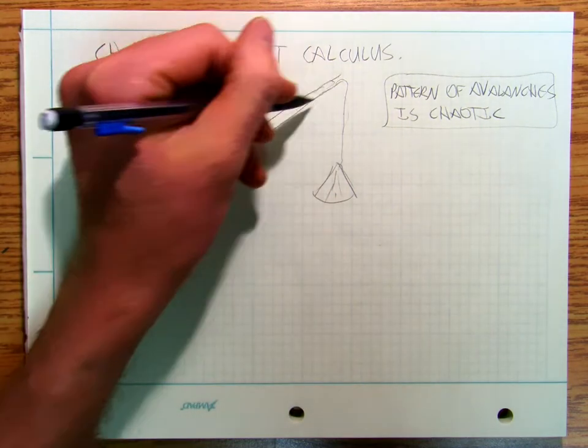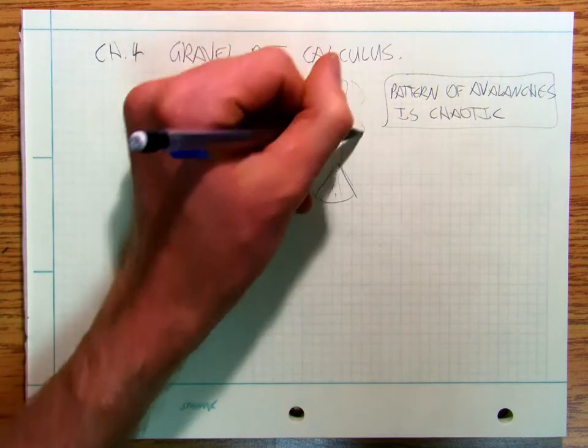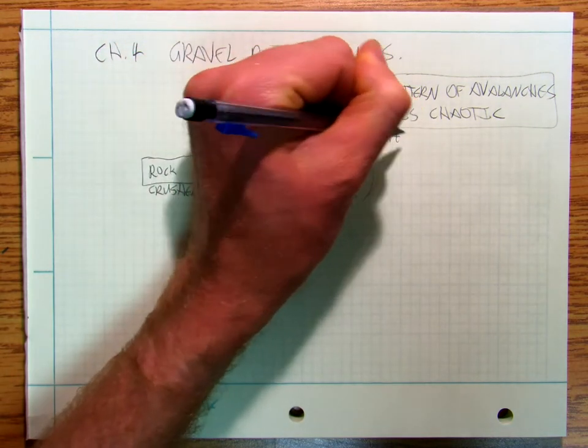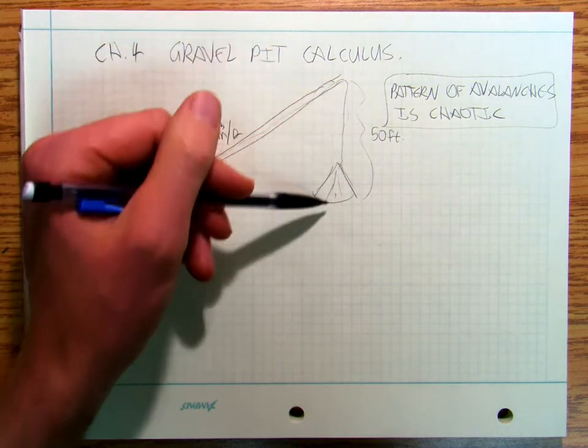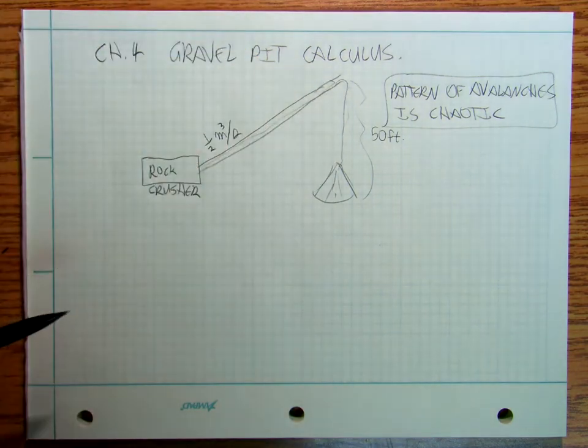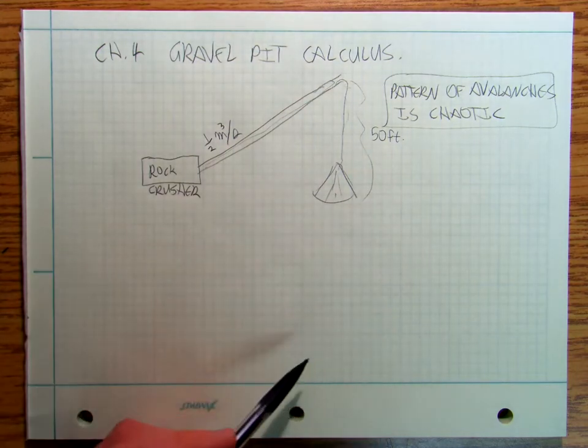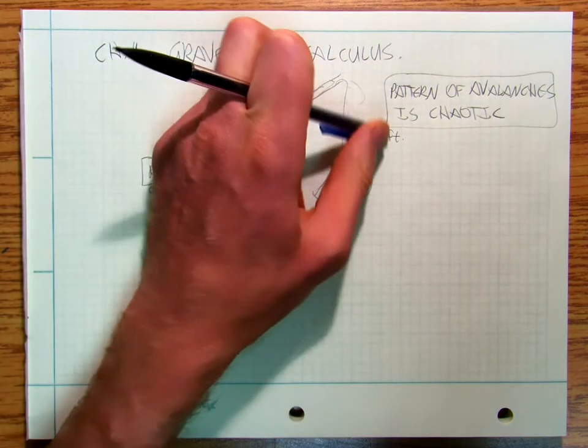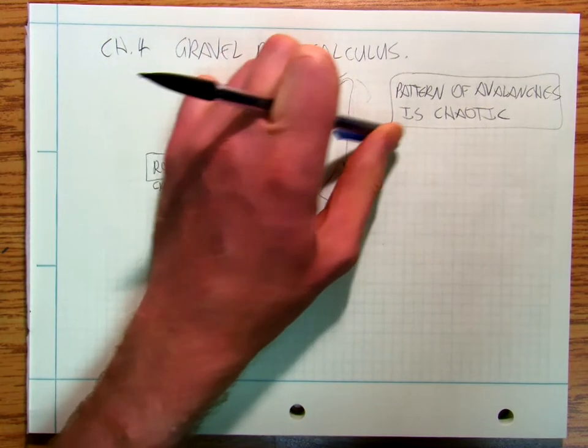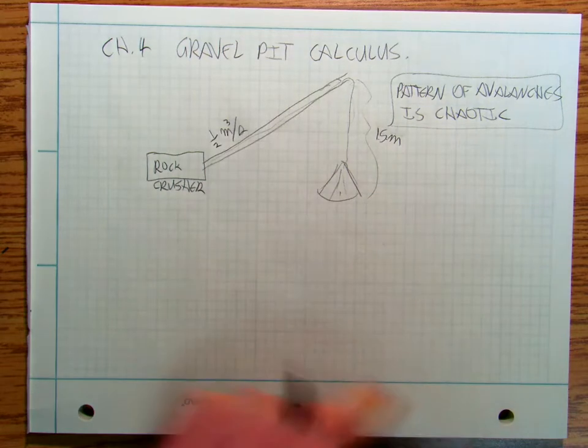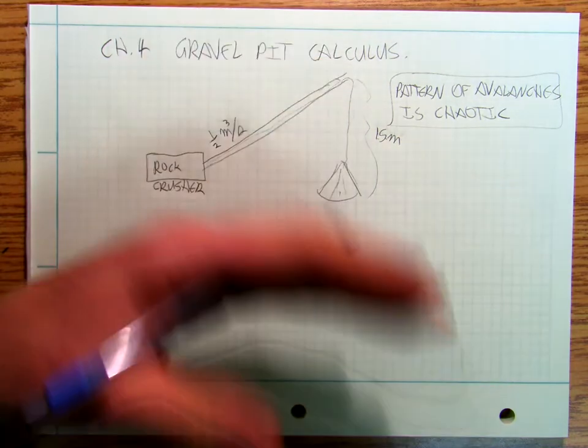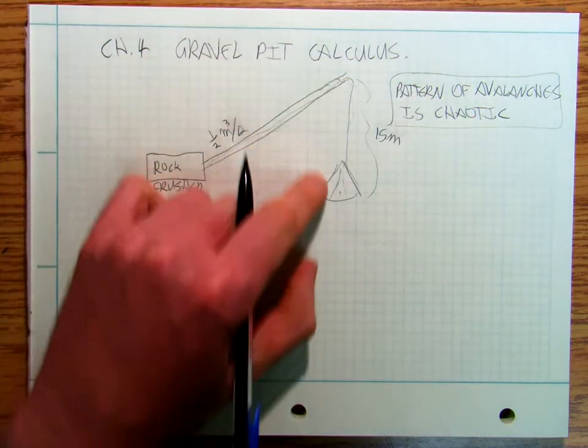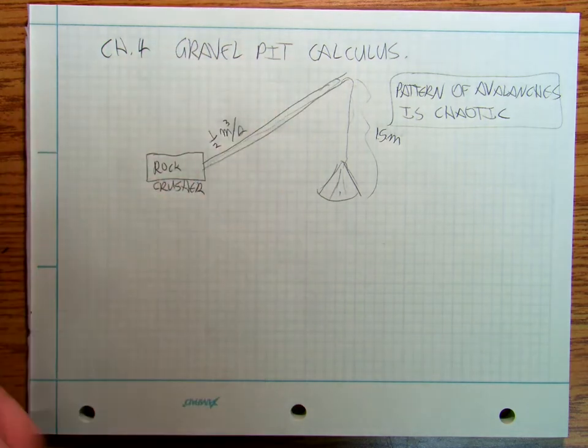So half a cubic meter per second is going up the conveyor belt. And now this conveyor belt is, the top of this conveyor belt is 50 feet off the deck. Let's just make it 15 meters. Keep it metric. Once it's 15 meters tall, then you have to move that to a different place so that you're going to drop your gravel onto a different pile.